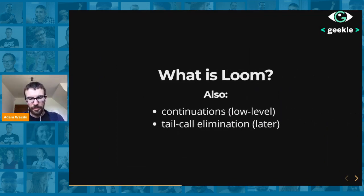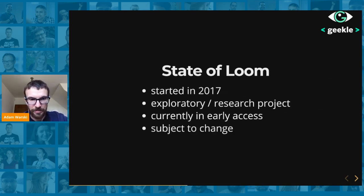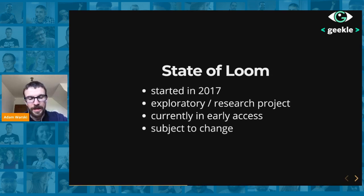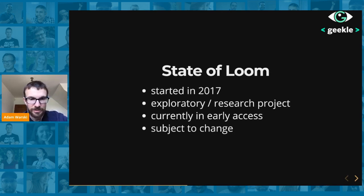Project Loom also includes continuations and tail call elimination coming later. Continuations are the low-level construct with which virtual threads and the retrofit are implemented. When is Loom coming to Java? The project started in 2017 and has been much of a research and exploratory project with different approaches tried. Currently it's available in early access but still subject to change. Given that Java is released every six months now, we can hope that Loom is coming sooner than later, though I'm not from Oracle and simply don't know when.